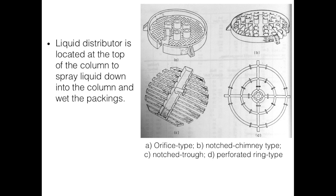At the top of the packed column there is a liquid distributor. Its job is to spray liquid down into the column to provide maximum contact surface between the liquid and gas on each packing. Types shown include the orifice type, the notch chimney type, the notch trough type, and the perforated ring type.